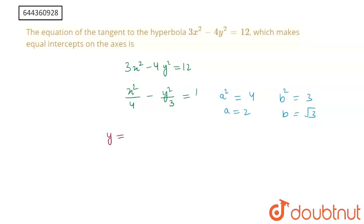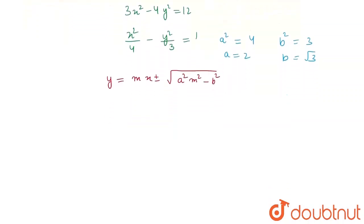We know that the equation of the tangent to a hyperbola is y = mx ± √(a²m² − b²). Putting in the values of a and b, the equation of the tangent becomes y = mx ± √(4m² − 3).